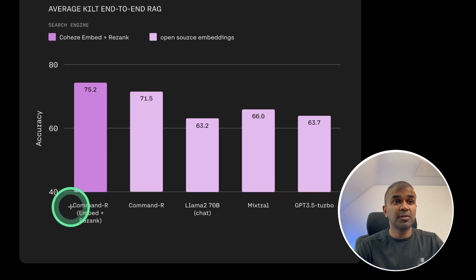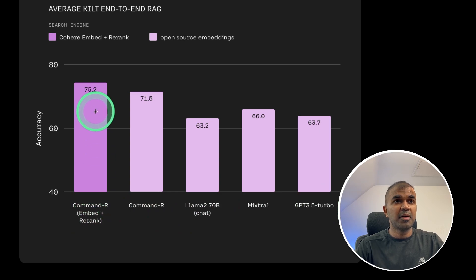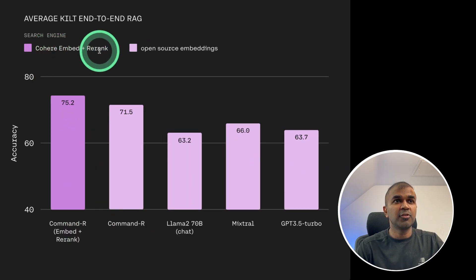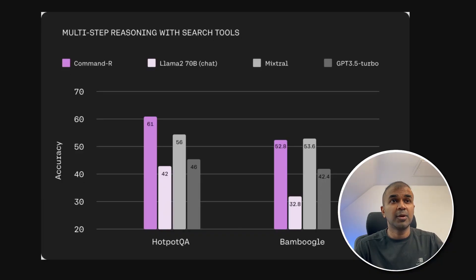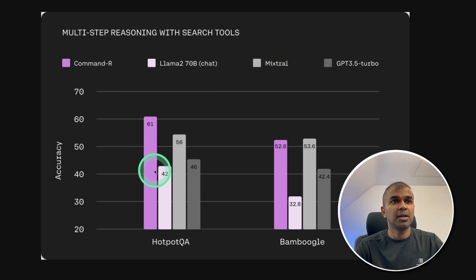When used together with an embedding and rerank model — the Cohere version — performance is even higher. This large language model is also good at function calling, enabling access to tools. You can see the comparison here between GPT-3.5 Turbo, Mixtral, Llama 2 70B, and Command R, and the accuracy for Command R is higher.